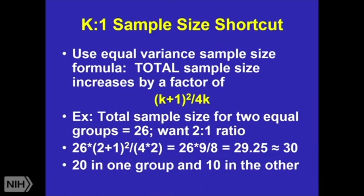The shortcut way of doing this: let's say I'm going to use an equal-variance sample size formula, so I assume both groups have the same variance. I want to look at the total sample size, calculate that, then increase it by this factor K. So let's say I'm doing 2-to-1 randomization. I calculate the total sample size — if I had two equally sized study arms, it's 26, so 13 per arm. Okay, 26 times (2 plus 1) squared, divided by 4 times 2. And I find out that I need 30 people in my study instead — 20 in one group, 10 in the other.